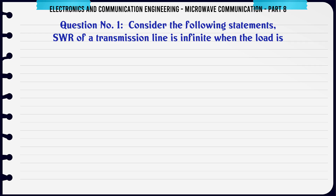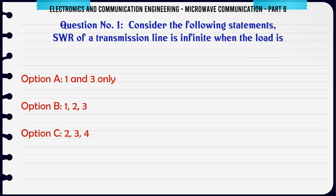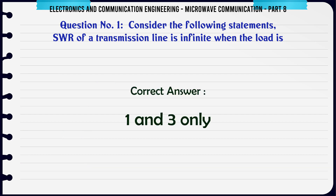Consider the following statements: SWR of a transmission line is infinite when the load is — A. 1 and 3 only, B. 1 2 3, C. 2 3 4, D. 1 2 4. The correct answer is 1 and 3 only.